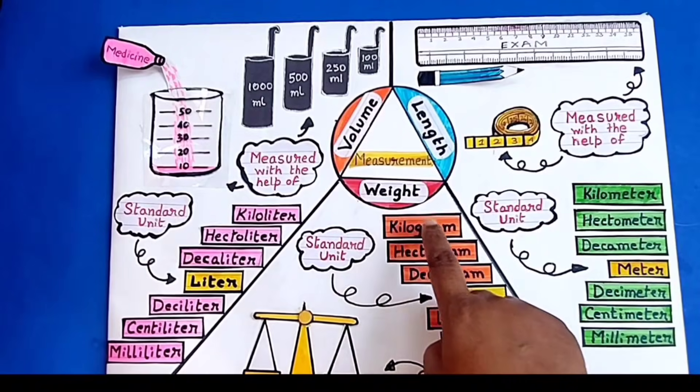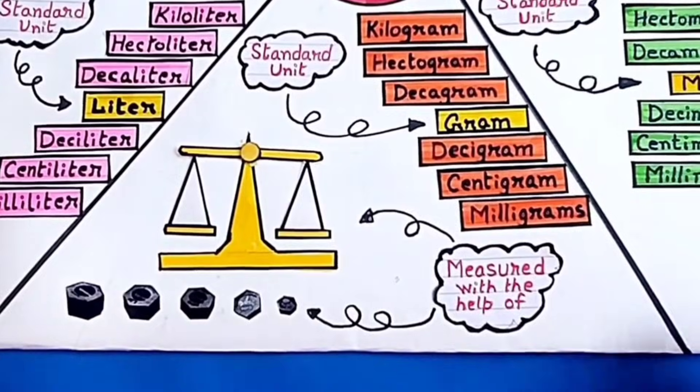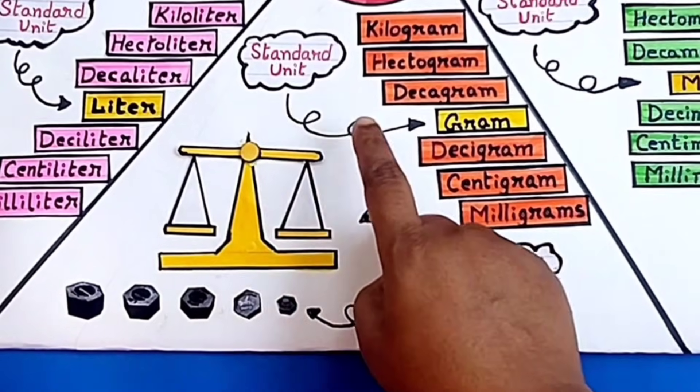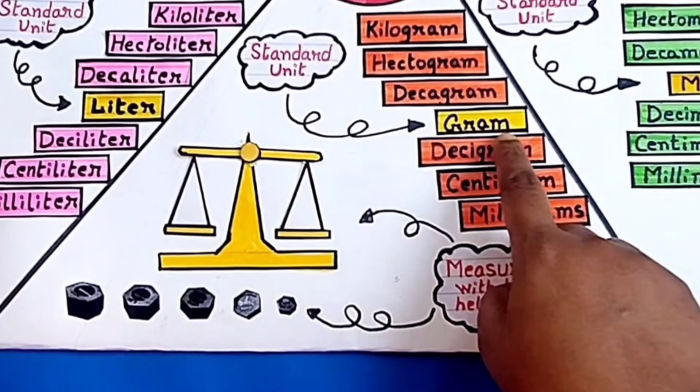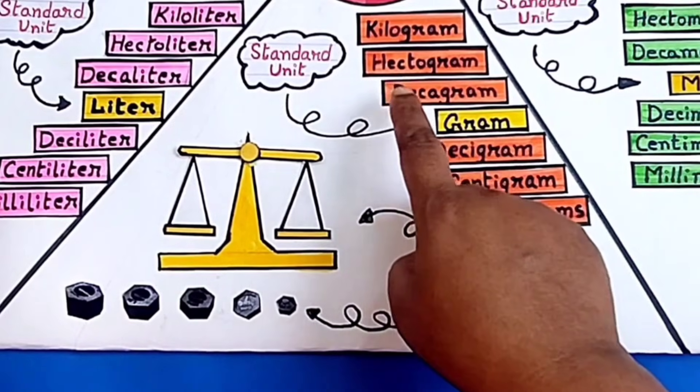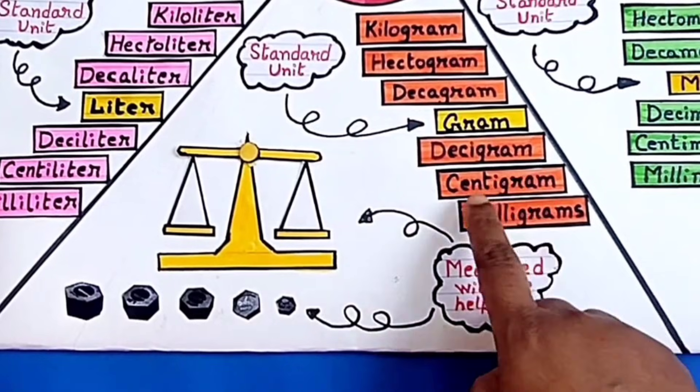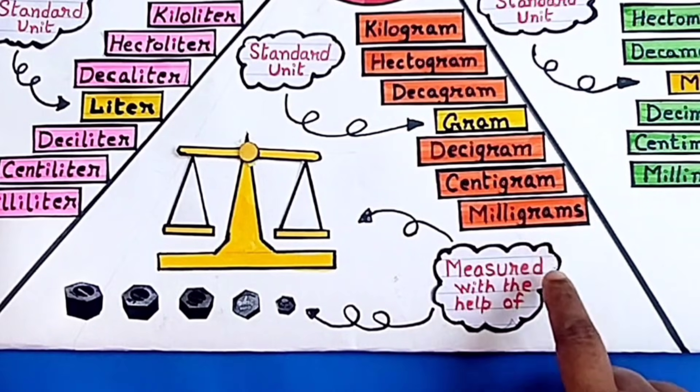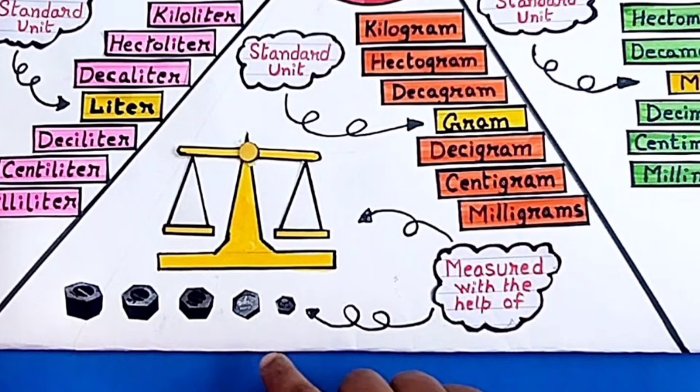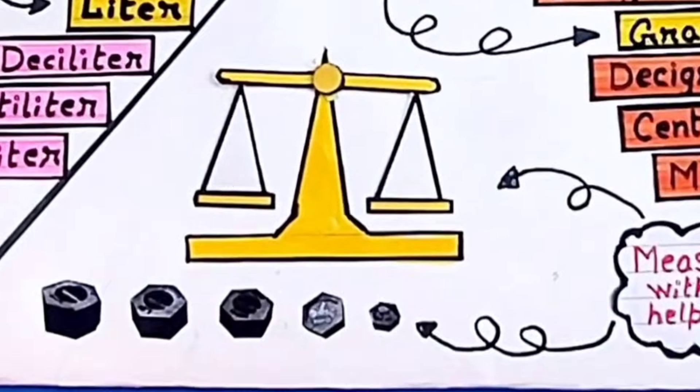Next is weight. The standard unit of weight is gram, and the other units are kilogram, hectogram, decagram, centigram, milligram, etc. Weight is measured with the help of some common types of weights and beam balance, electronic scale, etc.